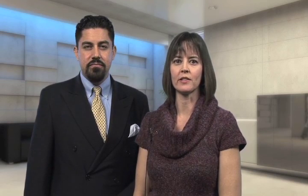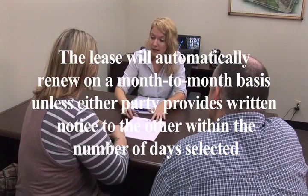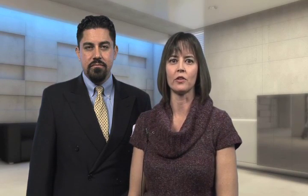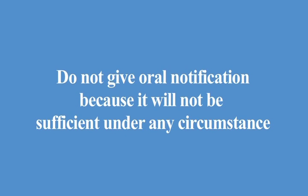Paragraph four, Automatic Renewal and Notice of Termination. This paragraph explains the renewal and termination process. The lease will automatically renew on a month-to-month basis unless either party provides written notice to the other within the number of days selected in paragraph four A. If the number of days is not selected, at least 30 days notice is required. The notice requirement must be strictly followed. If either party does not give the required notice, it will automatically continue on a month-to-month basis until either party provides written notice. The termination date of the month-to-month provision will depend on the date selected in paragraph four B. Any notice of termination must be in writing — do not give oral notification as it will not be sufficient under any circumstance. Keep in mind that the date on which rent is due does not apply to the requirement for providing written notice of termination.